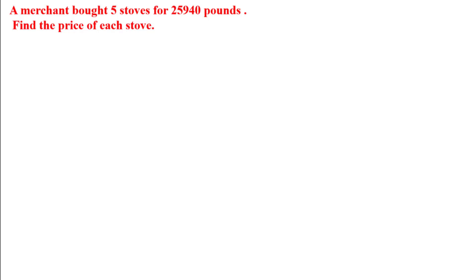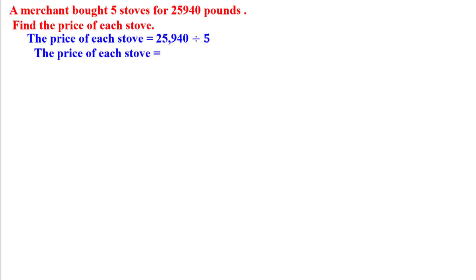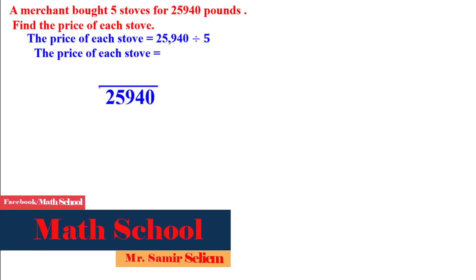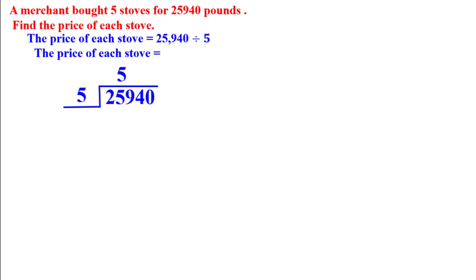Let's have a word problem. A merchant bought five stoves for 25,940 pounds. Find the price of each stove. To find the price of each stove, divide the total cost by the number of stoves: 25,940 divided by 5.